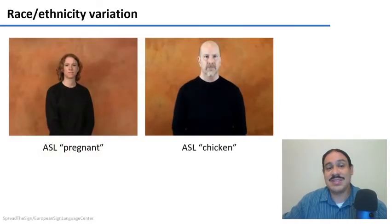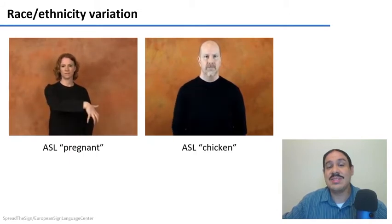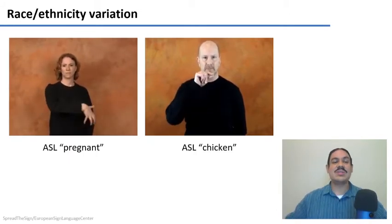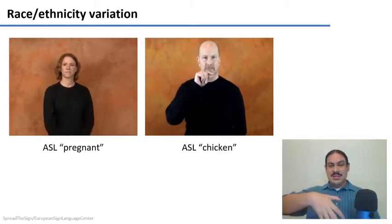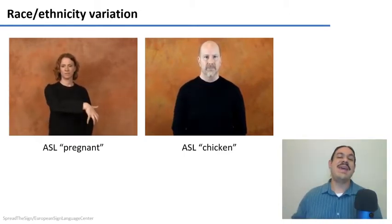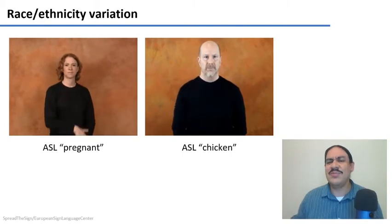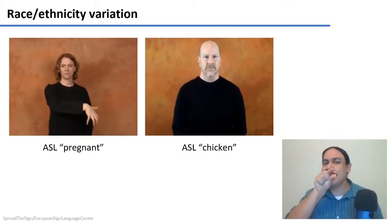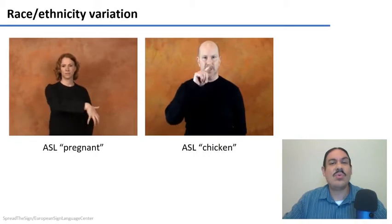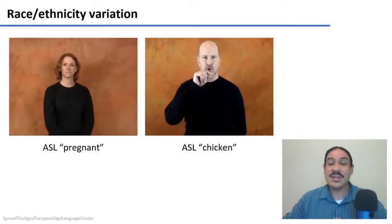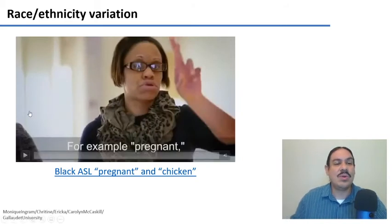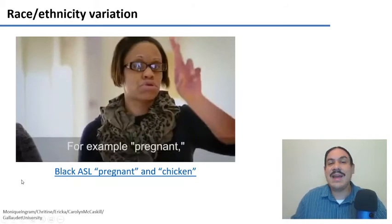This is also a very interesting example: we have variation by race or ethnicity in sign languages. These are the words in ASL for 'pregnant' — kind of representing the belly — and 'chicken,' which uses the beak. These are the standard words in American Sign Language for 'pregnant' and 'chicken.' Now let me show you what the variants are for Black ASL.